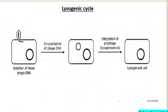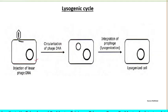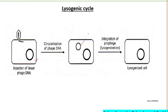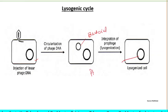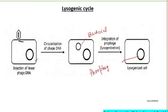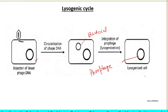In the lysogenic life cycle, the bacterial linear chromosome is integrated with the phage DNA. The phage DNA circularizes and integrates into the host bacterial DNA. This integrated phage DNA is known as a prophage, and the cell is now called a lysogenized cell or lysogen.